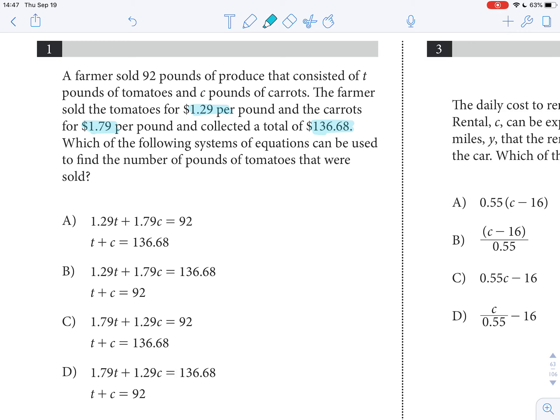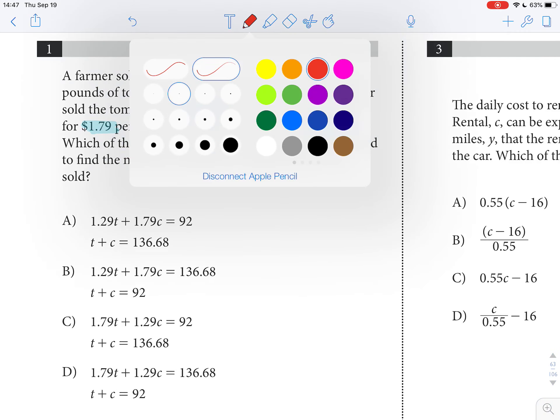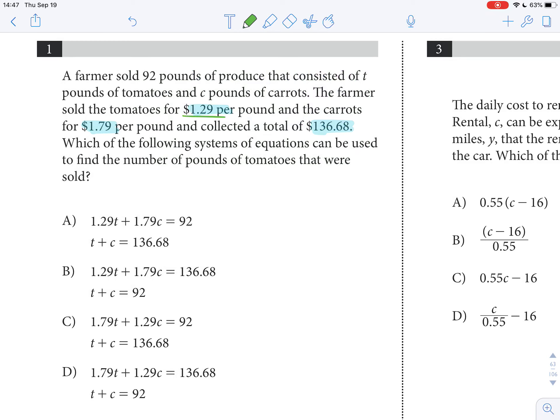Now we also want to make sure that we get the idea that the 1.29 is for the tomatoes, and so that's going to be the t. So the 1.29 has to be with the t. That's good. These are not good. So that eliminates C and D.